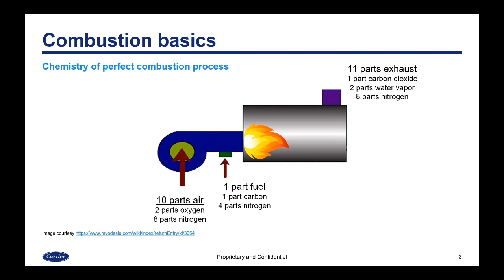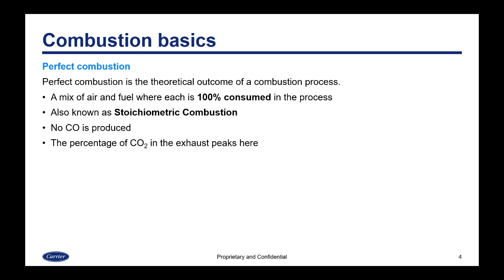This diagram shows how a perfect combustion process would work. You're going to have a component of air as well as a component of fuel, and together those are going to make up exhaust. Each air and fuel component is going to be made up of different chemical elements, as well as the exhaust. With perfect combustion — the theoretical outcome — all of the air and fuel would be consumed. This is also known as stoichiometric combustion, and with perfect combustion no CO is produced. The percentage of CO2 in the exhaust is at its highest with perfect combustion.